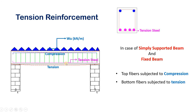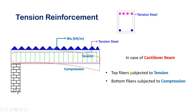So the tension steel is provided at the bottom side, on the tension side. But in the case of a cantilever beam, the tension steel or main reinforcement is provided on top of the beam, because when a load is applied on a cantilever beam, the bottom fiber is subjected to compression and the top fiber is subjected to tension. So on the top of the beam section, steel is provided in a cantilever beam.